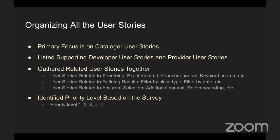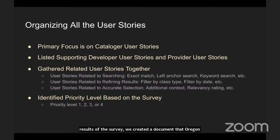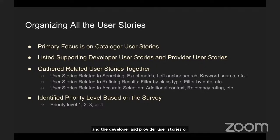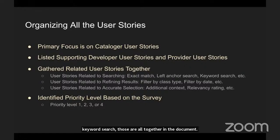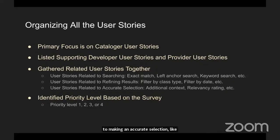With the full set of user stories defined and survey results in hand, we created a document that organizes the user stories. The primary focus is from the cataloger user story perspective, and the developer and provider user stories are listed underneath each cataloger user story that they support. Related user stories are gathered together — for example, user stories related to searching are together, such as search for exact match, left anchor search, and keyword search. User stories related to refining results through filtering are all together, as are user stories related to making an accurate selection, like additional context and relevance rating.